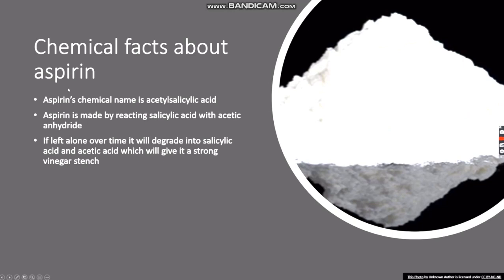Chemical Facts About Aspirin: Aspirin's chemical name is acetylsalicylic acid. Aspirin is made by reacting salicylic acid with acetic anhydride. If left over time, it will degrade into salicylic acid and acetic acid, which will give it a strong vinegar stench.